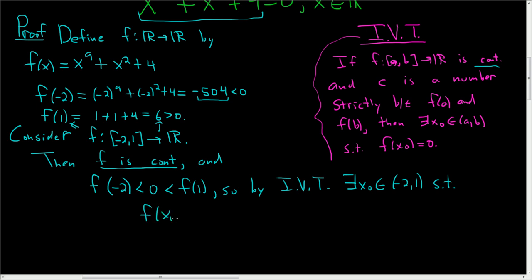So f of x0 is equal to 0. Well, what is f of x? F is this. So that means that x0 to the 9th plus x0 squared plus 4 is equal to 0.